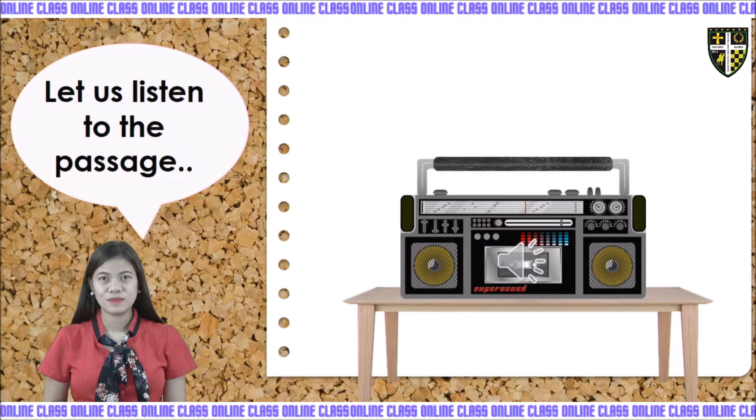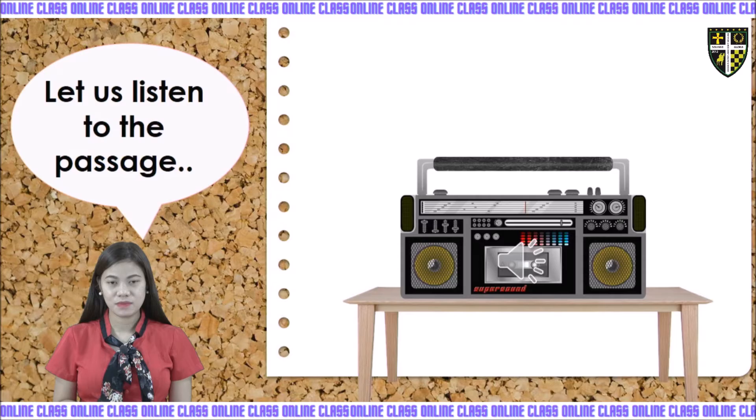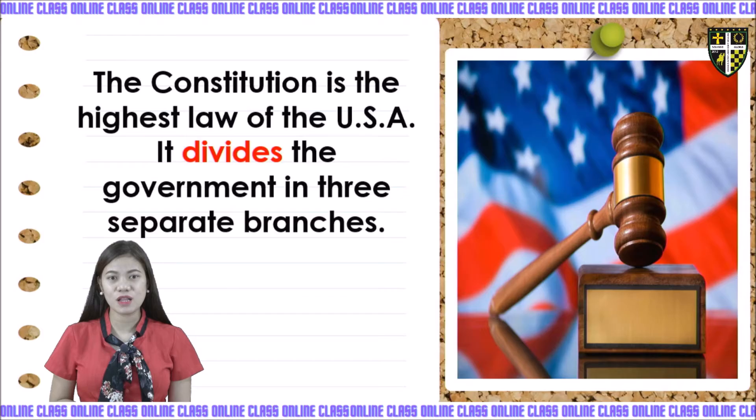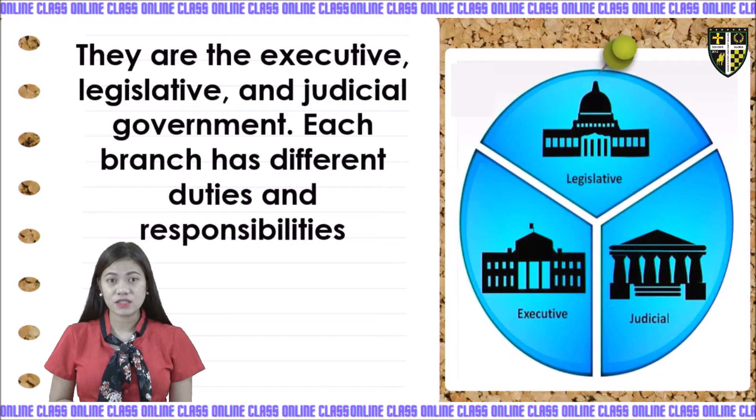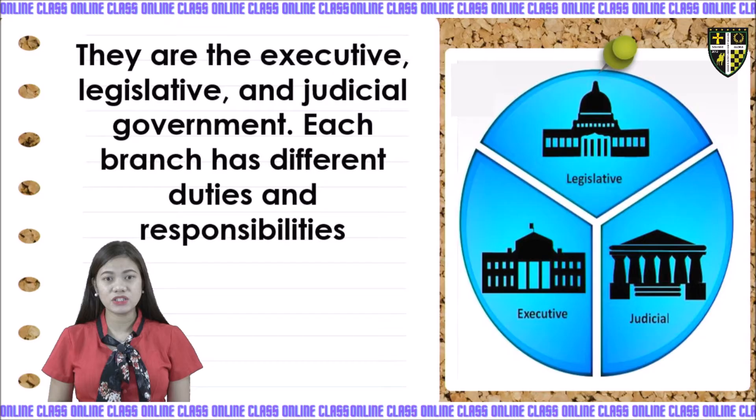Now, for you to understand more the passage, let us read our passage. The Constitution is the highest law of the USA. It divides the government into three separate branches. They are the executive, legislative, and judicial branches. Each branch has different duties and responsibilities.